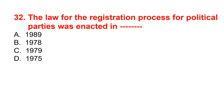The law for the registration process for political parties was enacted in which year? Options are 1989, 1978, 1979, or 1975. The correct option is 1989.